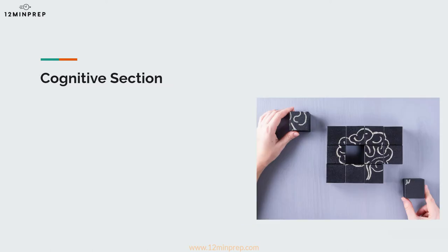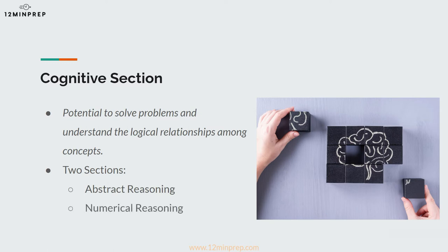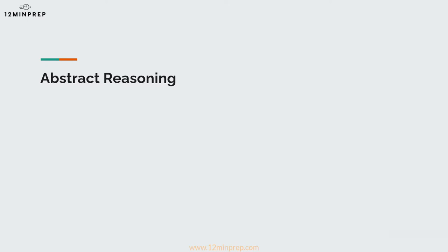Now let's get back to the cognitive section of the test, as I believe it is where you can improve the most. The abstract reasoning trait in the Caliper test is defined as the potential to solve problems and understand the logical relationships among concepts. People who show a high level of abstract reasoning ability should be capable of understanding complex issues. Individuals with low levels tend to be most effective when handling issues that have straightforward solutions. The cognitive section is broken into two main parts: abstract reasoning and numerical reasoning. Abstract reasoning questions will assess your ability to visualize and sort shapes, as well as your ability to understand patterns.